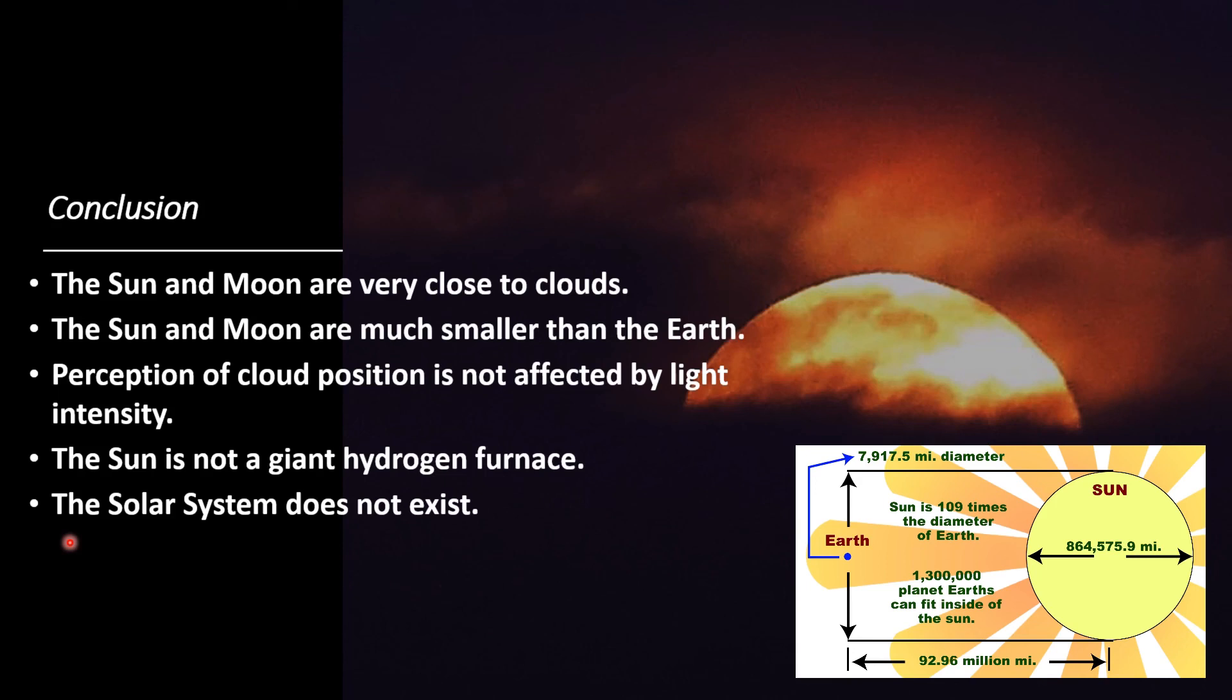If the sun is not out in space to provide the gravity well to create those orbits of all those rocky planets, then there is no solar system. It does not exist. The clouds behind the sun and moon change everything. It's a game changer. Those are my conclusions. And remember, don't accept, verify.